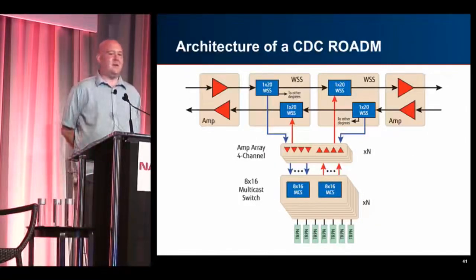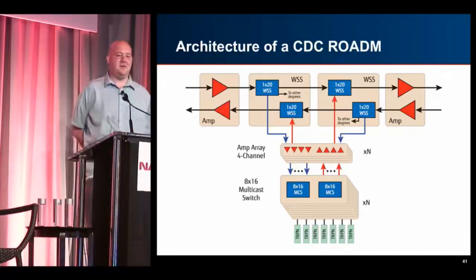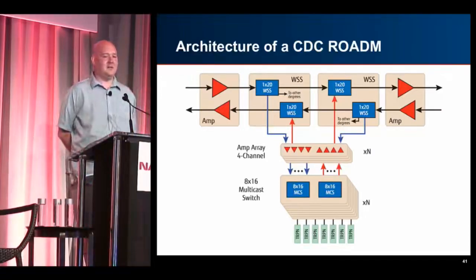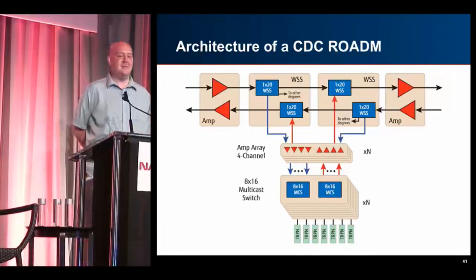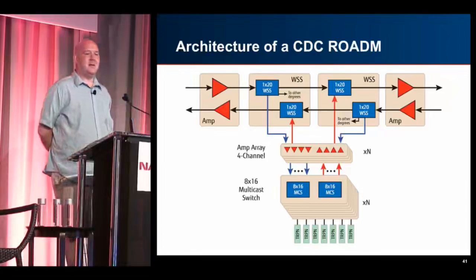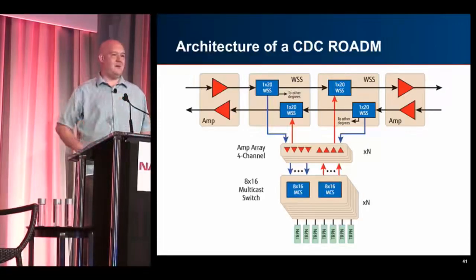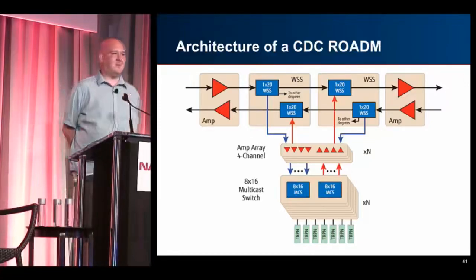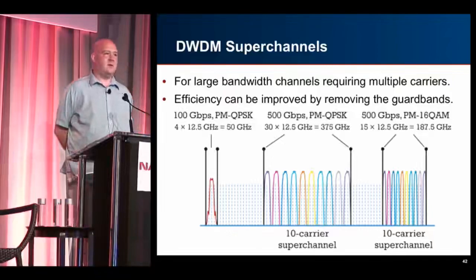The architecture of a CDC ROADM is complex. You've got a 1×20 WSS — wavelength selectable switch — amplifying every one of these channels, so there's a whole bunch of amplifiers inside the ROADM itself. Then you've got an 8×16 multicast switch. The technique used is basically multicasting: the signal gets multicast to every port, amplified, and then filtered down to just the frequencies you want. It's a weird, complex system, but it makes it completely software-reconfigurable.